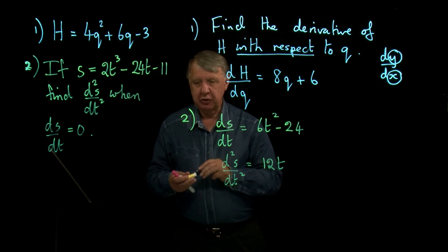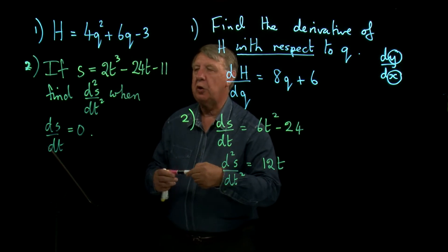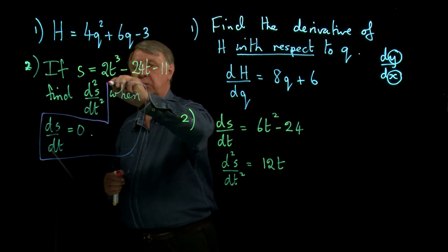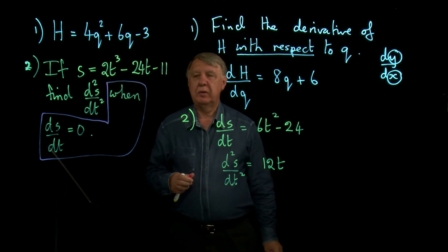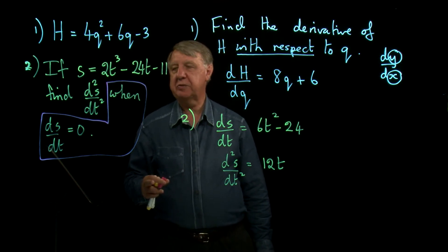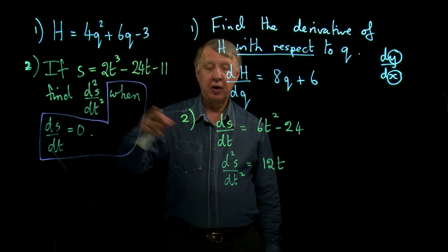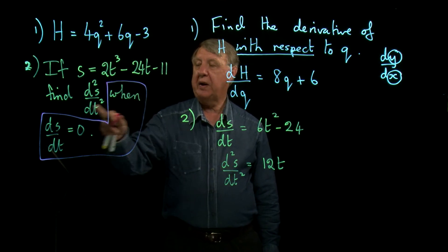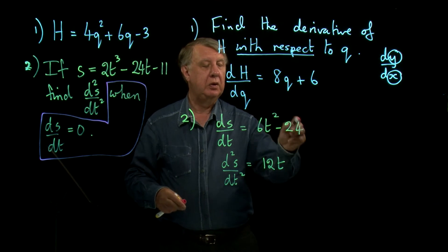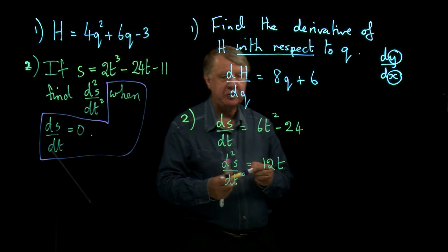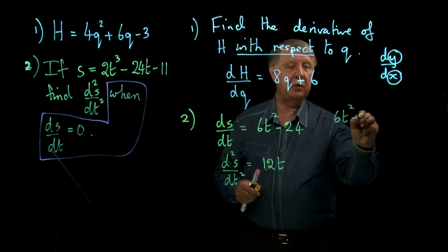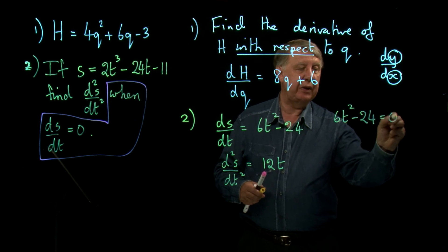Now the question could have stopped at that point—in other words, I've finished there—but it doesn't stop there. It goes on to ask me something else. It says find this when ds/dt, that's the first derivative, is zero. So what happens if the first derivative is zero? Well, that means that 6t² - 24 has to be zero.